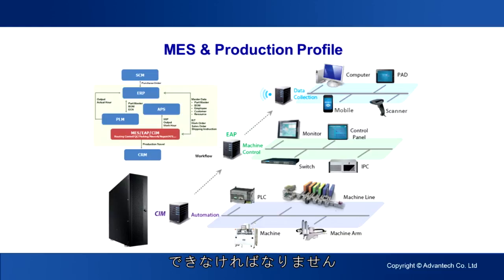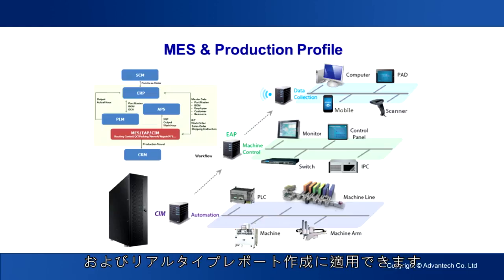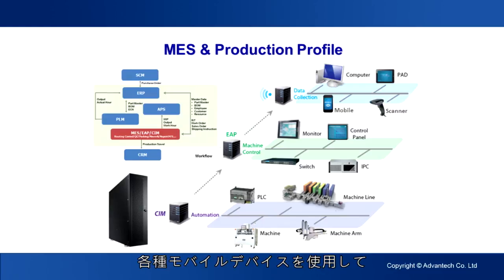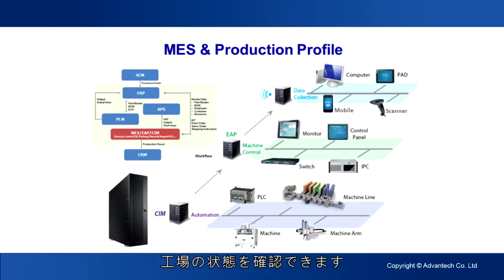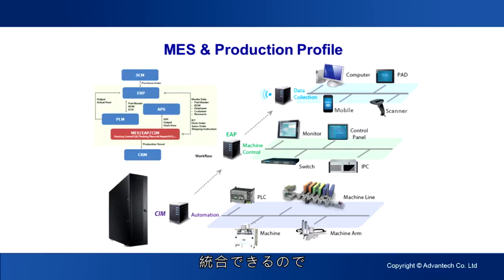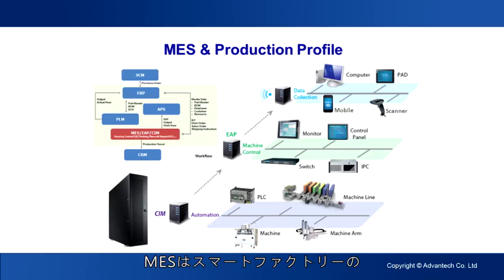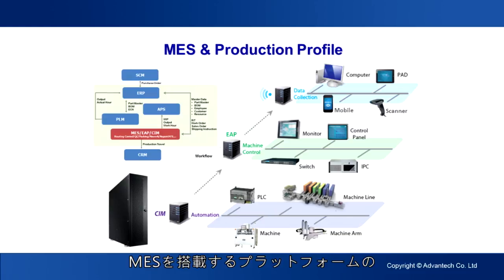By gaining massive data analysis in real time, the new MES improves product quality and customer satisfaction while reducing production costs and maximizing enterprise benefit. Advanced MES should be online in real time to administer every work item precisely. Reports are applicable for complete query and real-time generation. Various mobile devices like smartphones and tablets can be used to carry reports and get factory status immediately. It can also integrate into business intelligence in the enterprise so managers can view production line reports thoroughly.